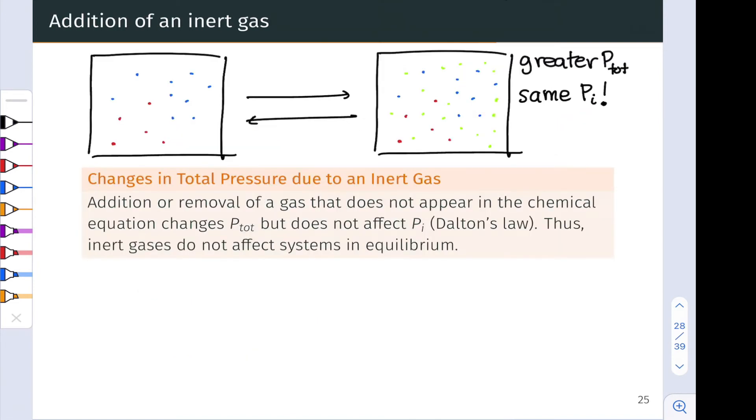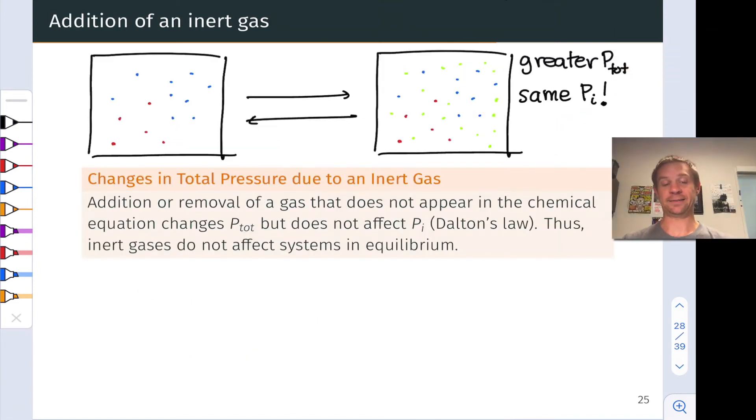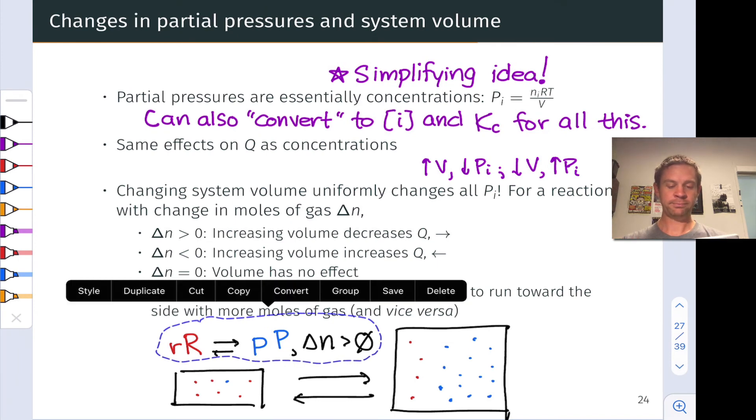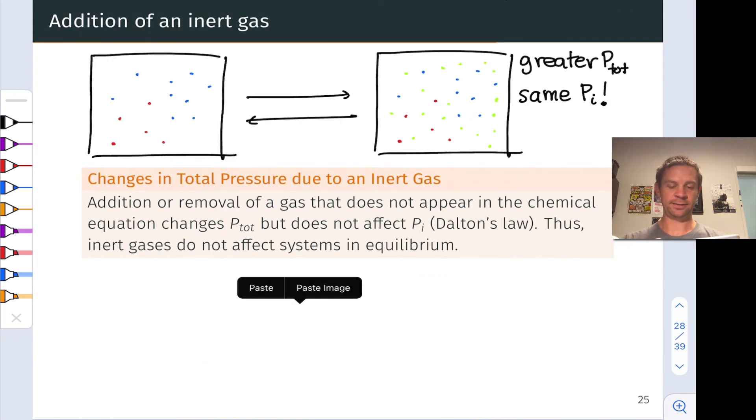Finally, let's touch on what happens if we add an inert gas to a chemical system that's in equilibrium. So, say we have actually the same reaction that we had from the previous slide. I'm just going to copy and paste this chemical equation so that we have a concrete thing to think about here. We've got r, reactant gas molecules in red, and p, product gas molecules in blue. And say we add an inert gas in green.